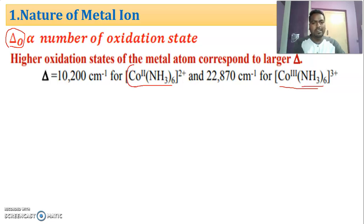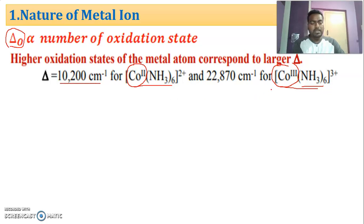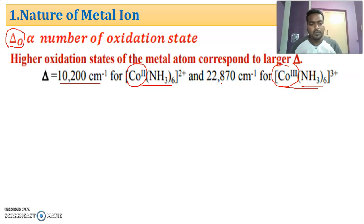Here the oxidation state of cobalt is +2, and here the oxidation state of cobalt is +3. The crystal field stabilization energy of the cobalt(II) complex is 10,200 cm⁻¹, but the cobalt(III) complex is nearly 22,870 cm⁻¹. So if the oxidation number increases, it nearly doubles the crystal field stabilization energy — cobalt +2 has less stabilization energy compared to cobalt +3.